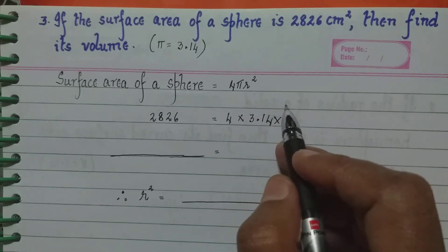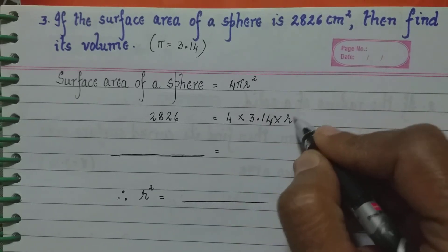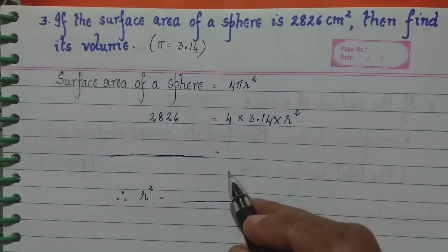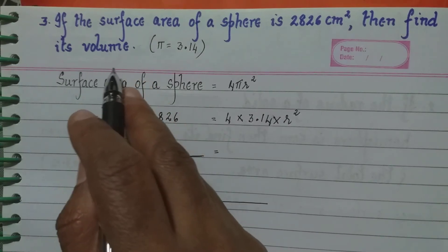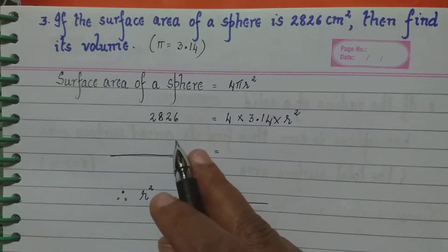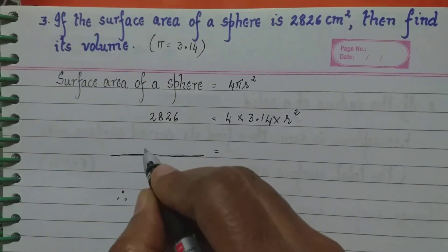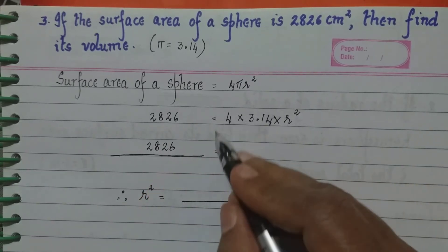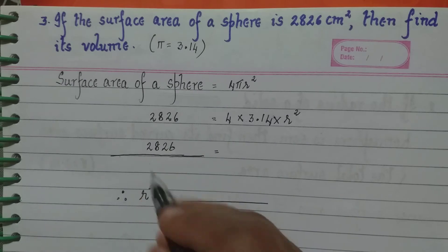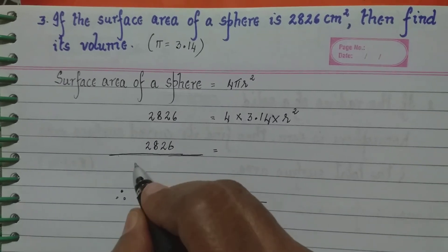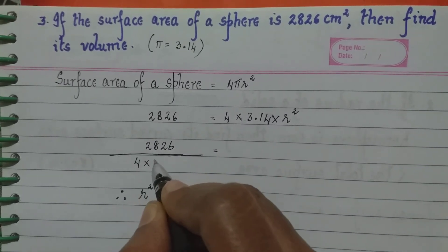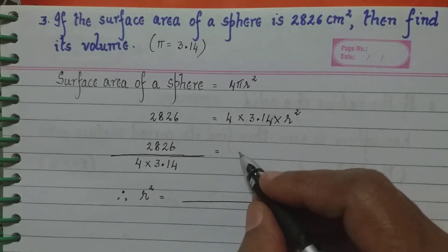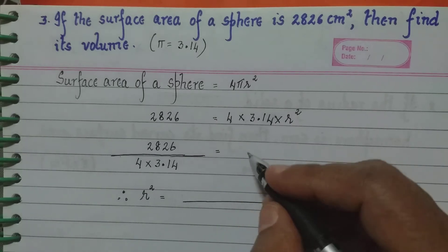Now we do not know what r is, so we write r² as it is. First we find what r is, and then find the volume, because the question is to find the volume. We have 2826 on the left-hand side; we take 4 into 3.14 to the denominator, so r² equals 2826 divided by 4 into 3.14.